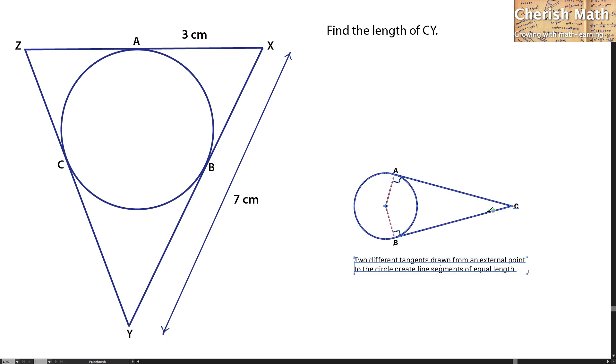Now, I'm going to use this diagram to explain what is going on here. Two different tangents drawn from an external point to the circle create line segments of equal length. The external point is referring to point C. Point A and point B are points of tangency to the circle for line AC and line BC.